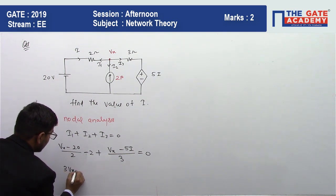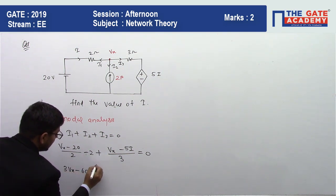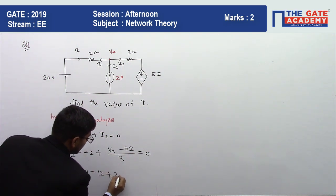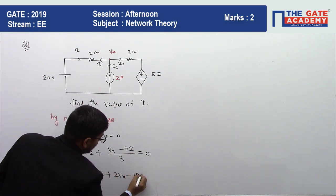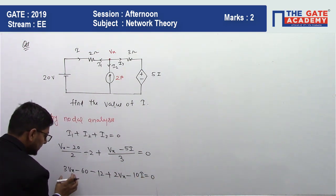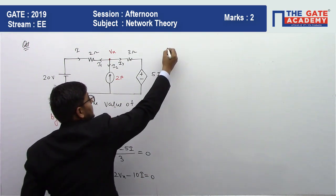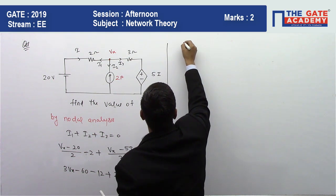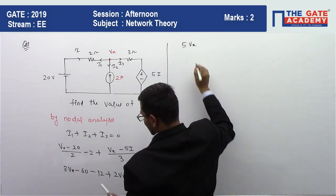After solving this, we can get, just simplify this equation, 3Vx plus 2Vx equals 5Vx minus 10I, and 60 plus 12 equals 72.